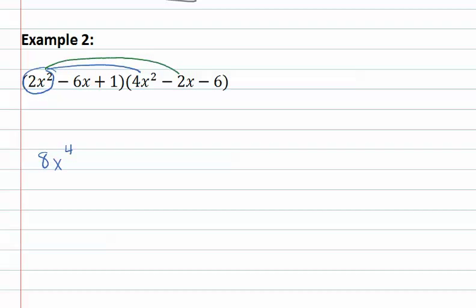2x squared times negative 2x is negative 4x cubed. Don't forget we're adding 1. 2x squared times negative 6 is negative 12x squared. And then we'll move on to the second term.